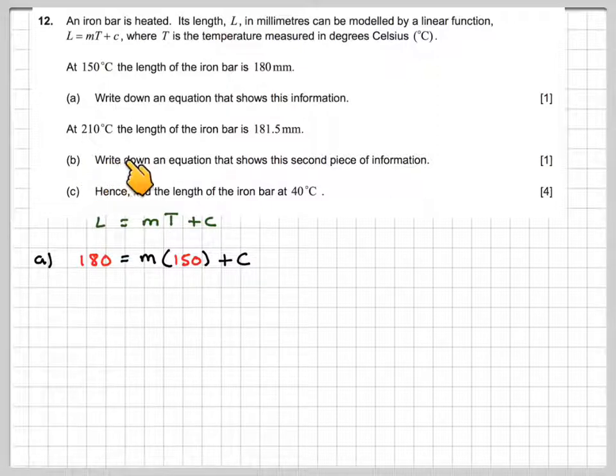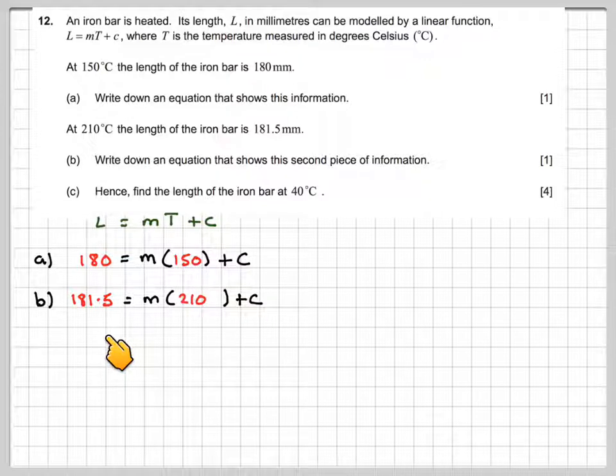At 210 degrees, the length of the iron bar is 181.5 millimeters. Write down an equation that shows this second piece of information. So we've got 181.5 equals m times 210 plus C.